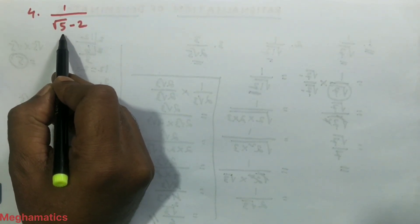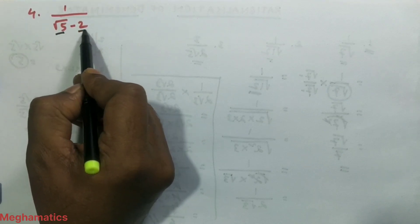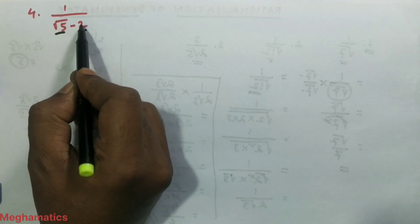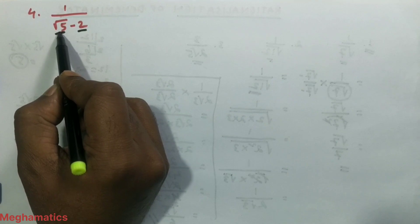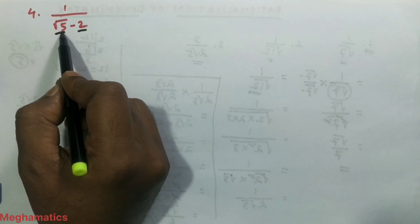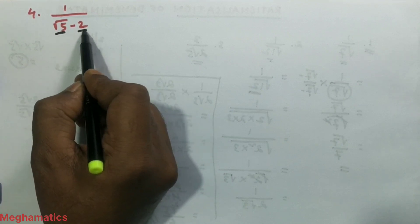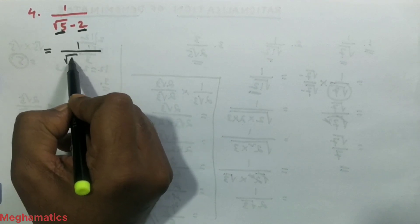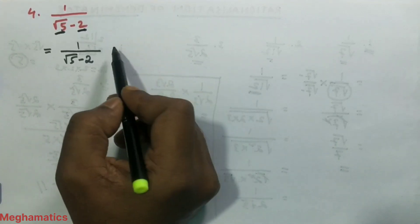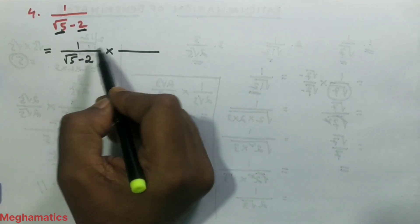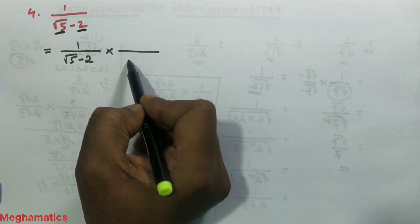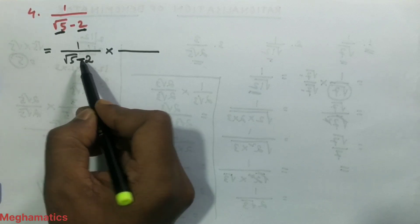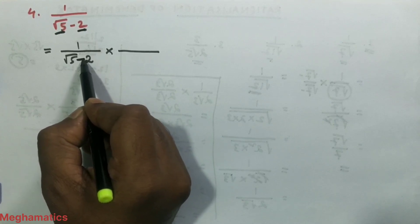Now we will look at a question where the denominator has two terms. The process will be a little different. First we check whether there is any composite number. Here both 5 and 2 are prime numbers, so we start direct rationalization. When there are two terms in the denominator, we multiply both numerator and denominator by the conjugate — we simply change the sign between the two terms.